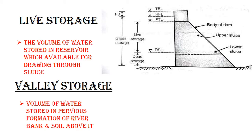Next is valley storage. In the river, there are two banks with pervious side formations. Water can percolate through these formations — that means storage. There are many different locations in the river with pervious side formations. These locations are called valley storage. Valley storage is also called live storage.